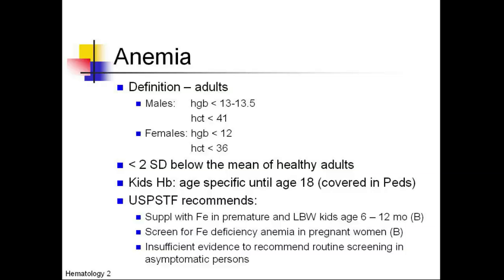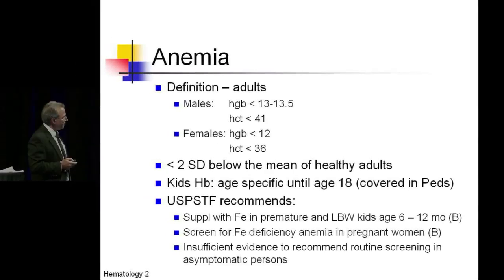We're going to start off by looking at anemia. Definitions are pretty self-explanatory — basically two standard deviations below the mean of apparently healthy adults, which is how almost all normal or abnormal labs are actually defined. For children, and this is going to be covered more in the pediatric section, there are some age-specific hemoglobins up until about the age of 18 or so.